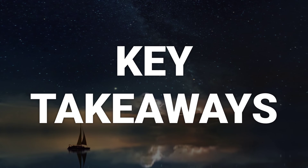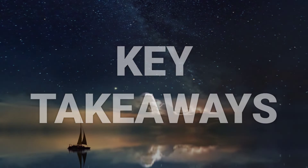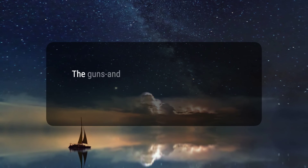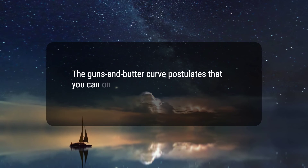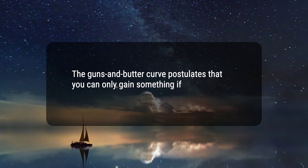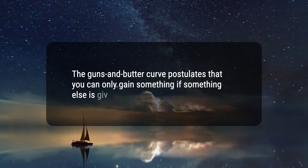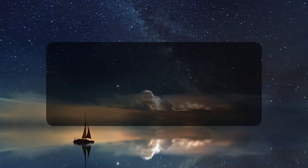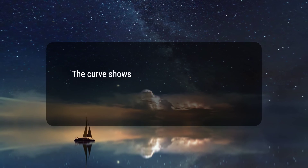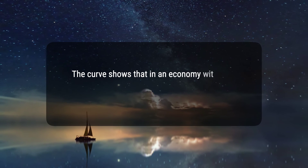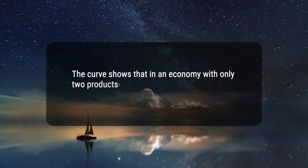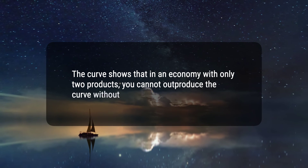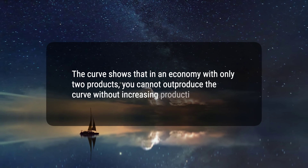Here are three key takeaways. 1. The guns and butter curve postulates that you can only gain something if something else is given in return. 2. The curve shows that in an economy with only two products, you cannot out-produce the curve without increasing productivity.